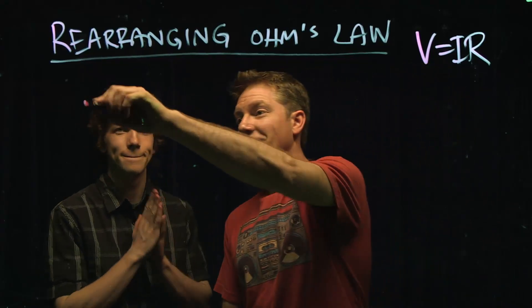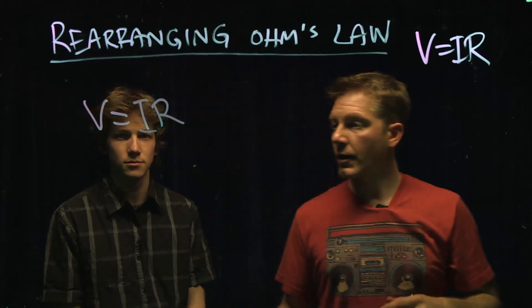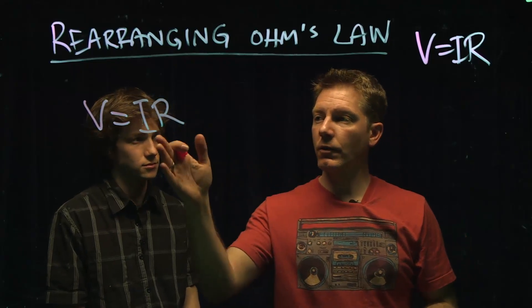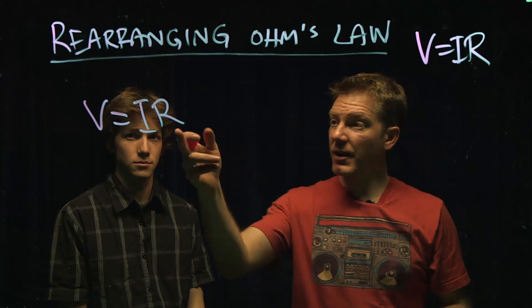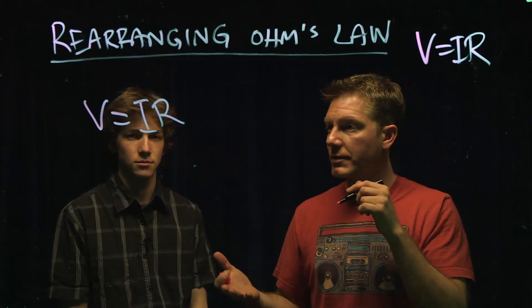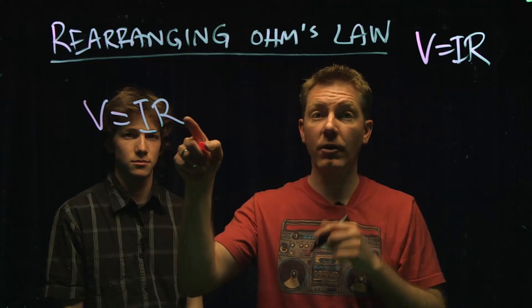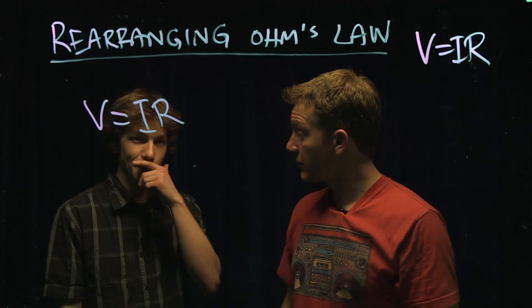I think so. So you start with V equals IR. I want to get what I don't know on one side and what I do know on the other side. So I know that I is already there, and I want I to be by itself. What I have to do is get R out of there. Do we want R there? No. We do not want R there. So tell R, get out of there.